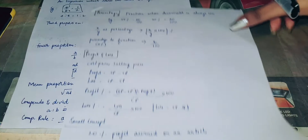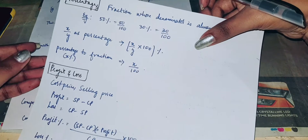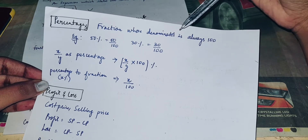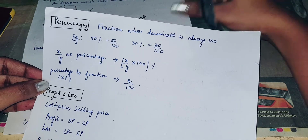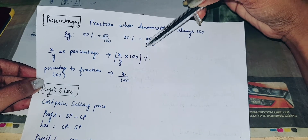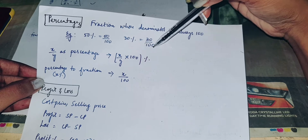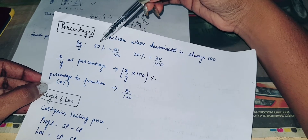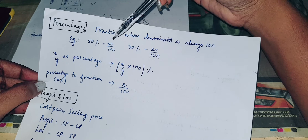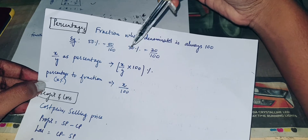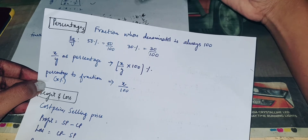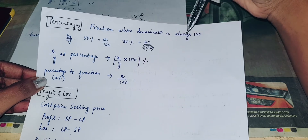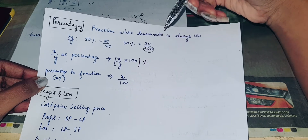Percentages are any fraction whose denominator is always 100. This fraction can represent 100%. For example, 50% is 50 by 100, 30% is 30 by 100 — the denominator is always 100. That's our percentage.